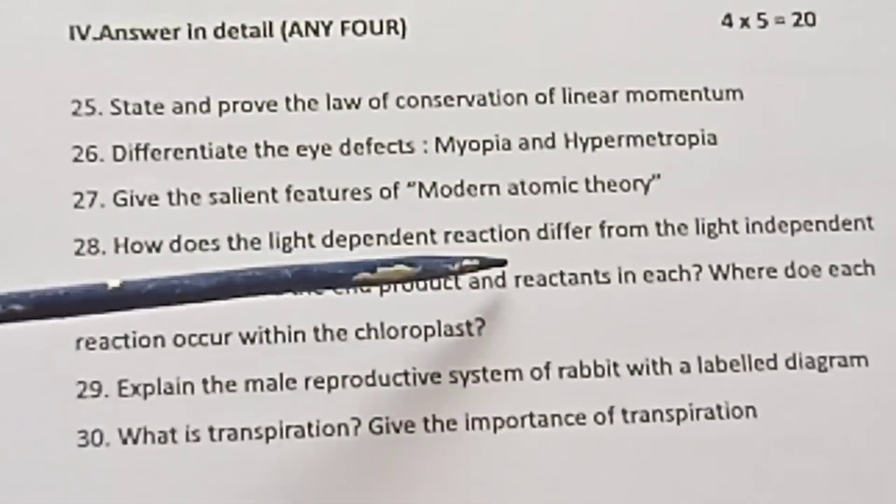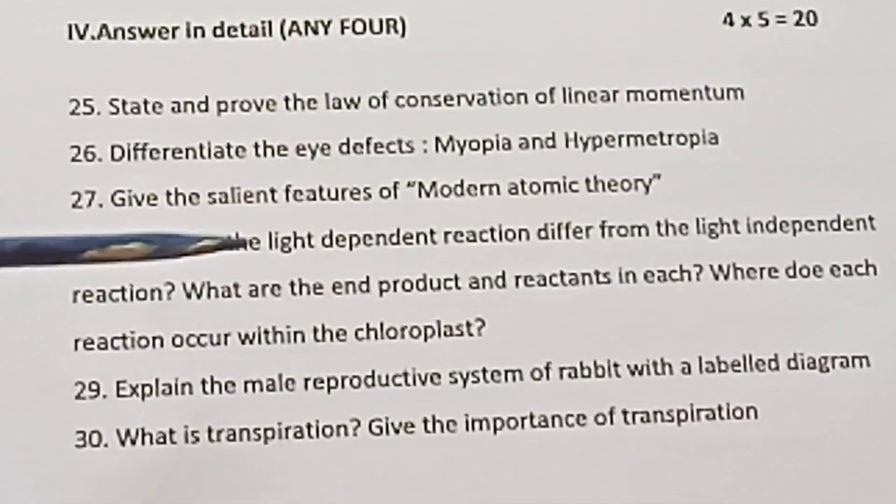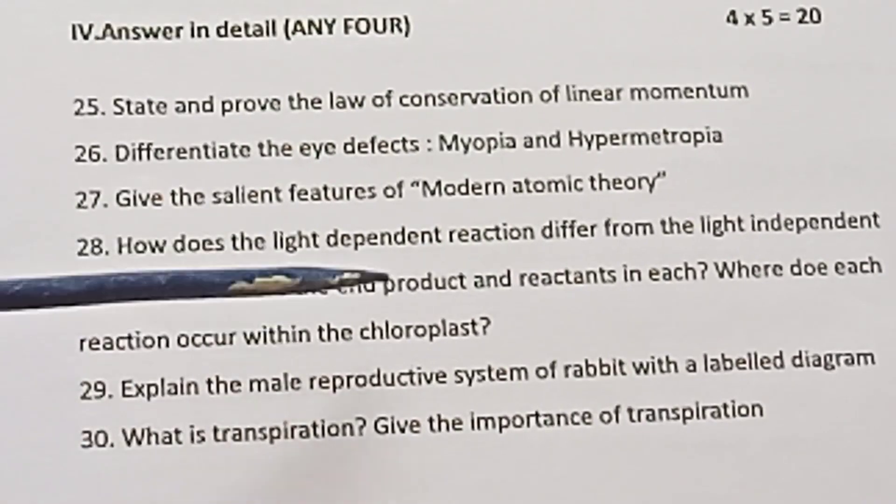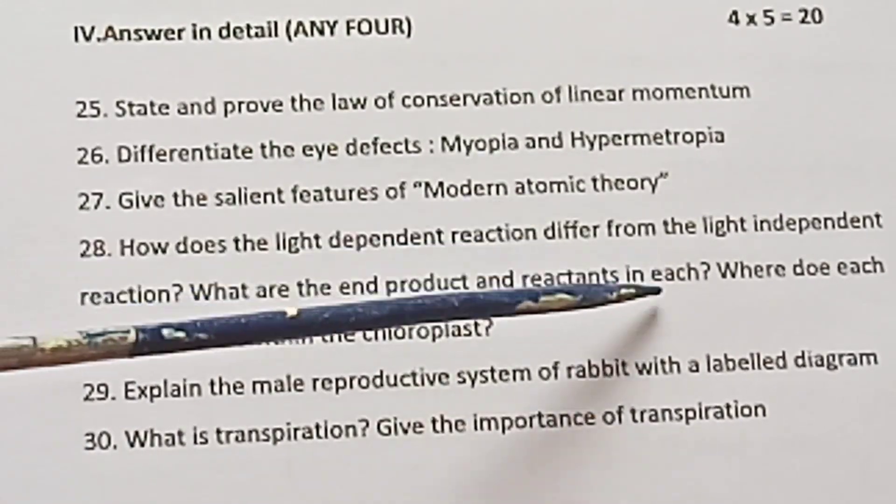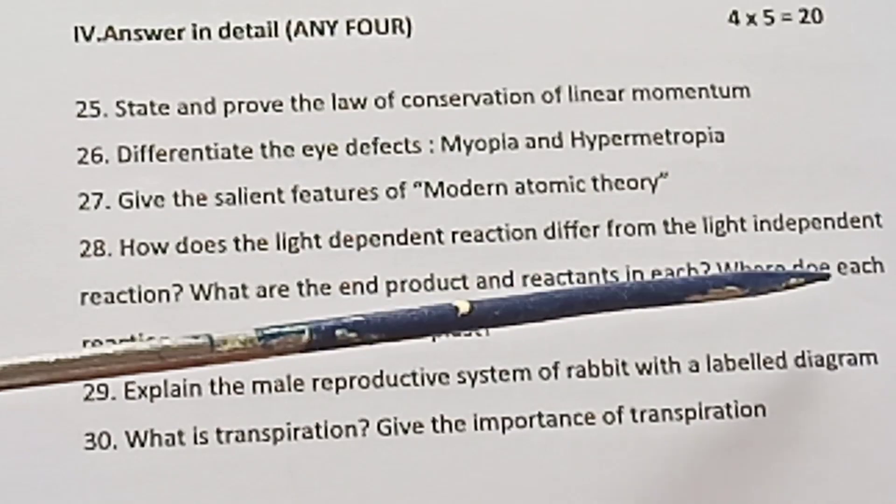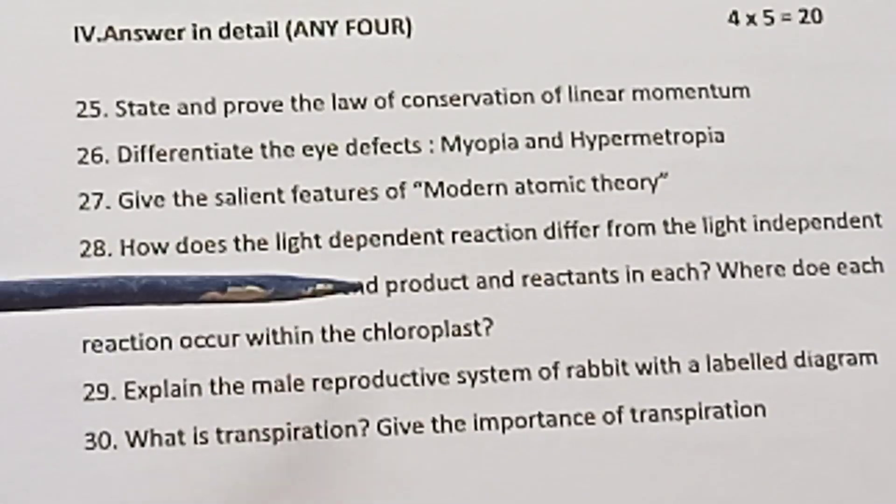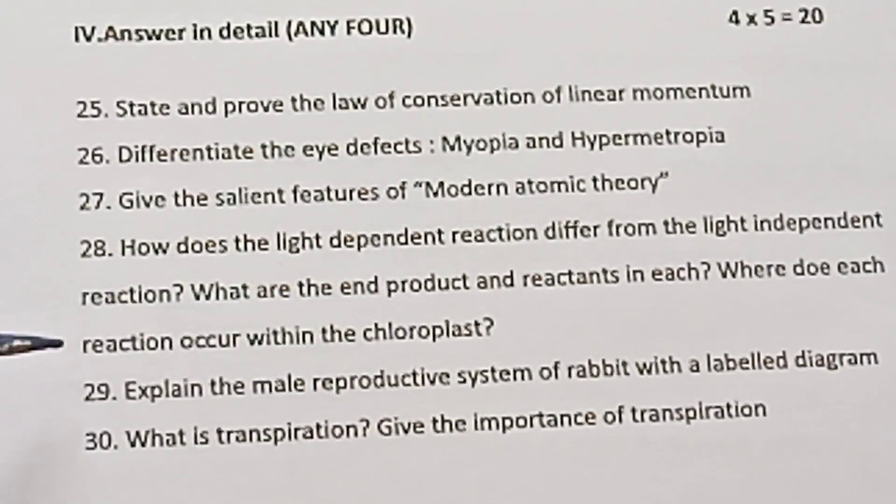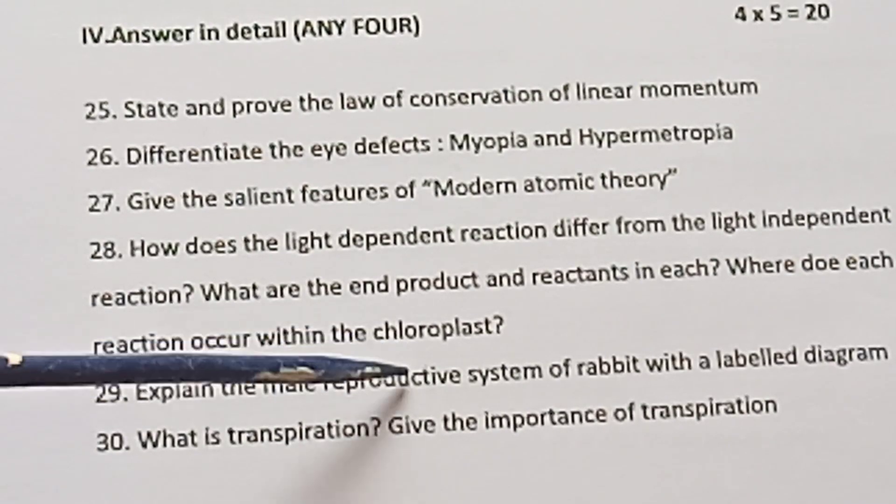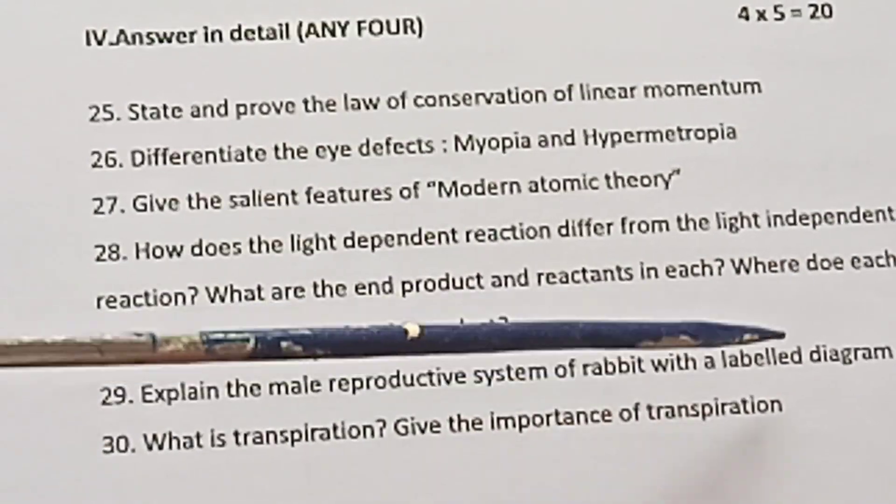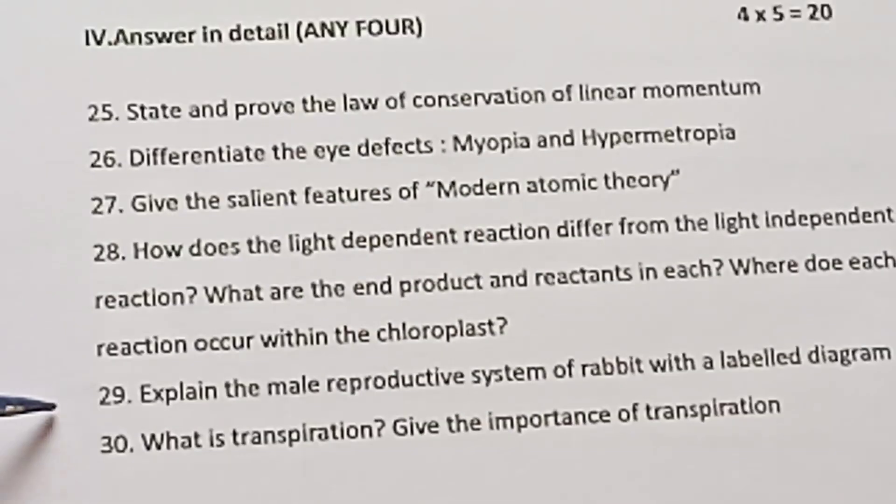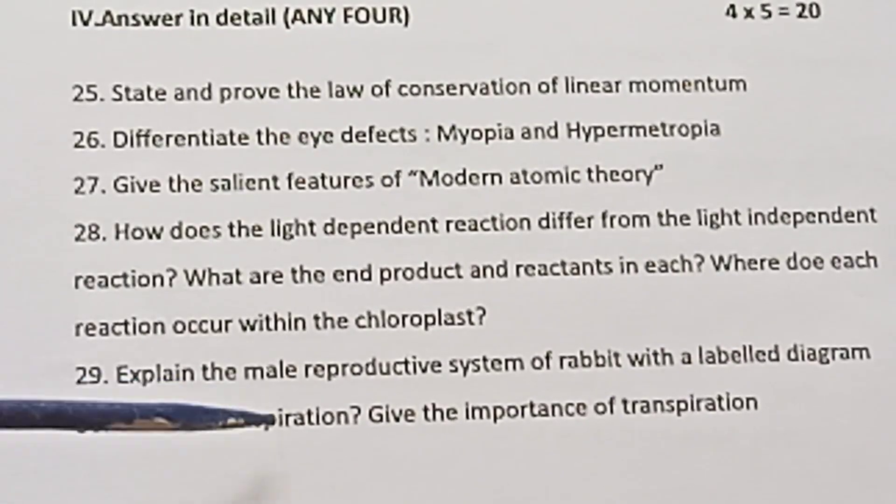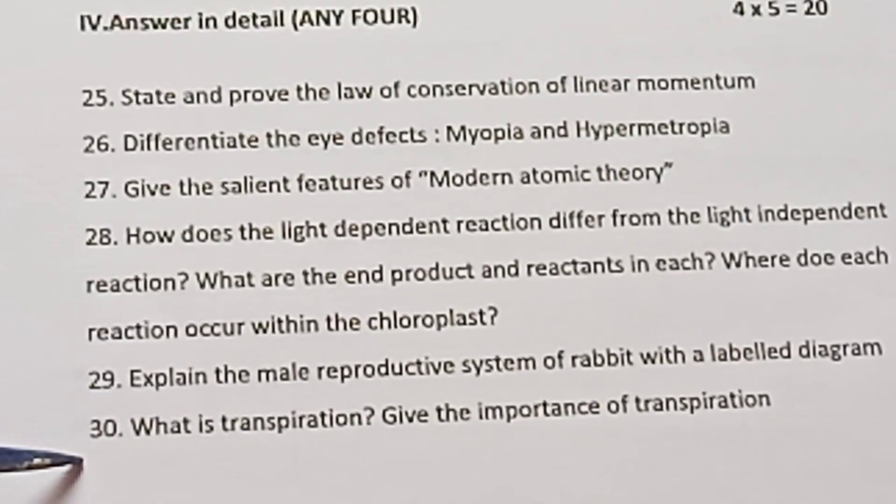28th. How does the light dependent reaction differ from the light independent reaction? What are the end product and reactants in each? Where does each reaction occur within the chloroplast? 29th. Explain the male reproductive system of rabbit with a labelled diagram. This is also important question. 30th. What is transpiration? Give the importance of transpiration. Repeated question.